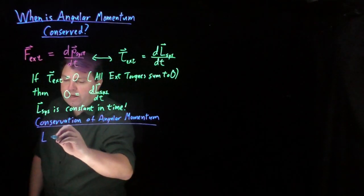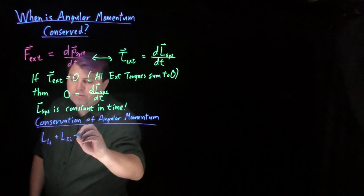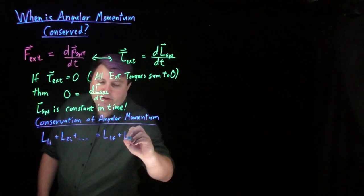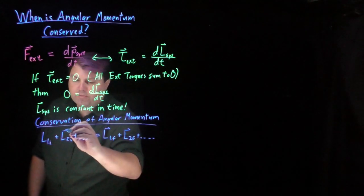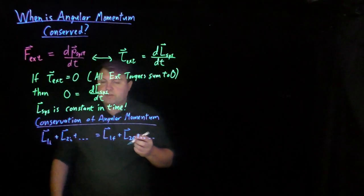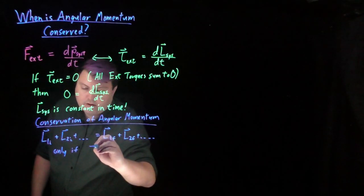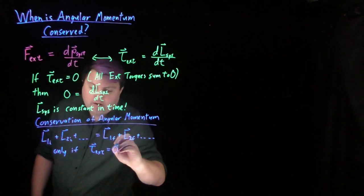We can say that the angular momentum for one initially plus the angular momentum for two initially, and so forth, is equal to the angular momentum for one final plus the angular momentum for two final, and so forth. In this class, we're not going to deal with angular momentum in multiple directions, but we can treat it as a vector quantity. But this is only if our external torque is zero.